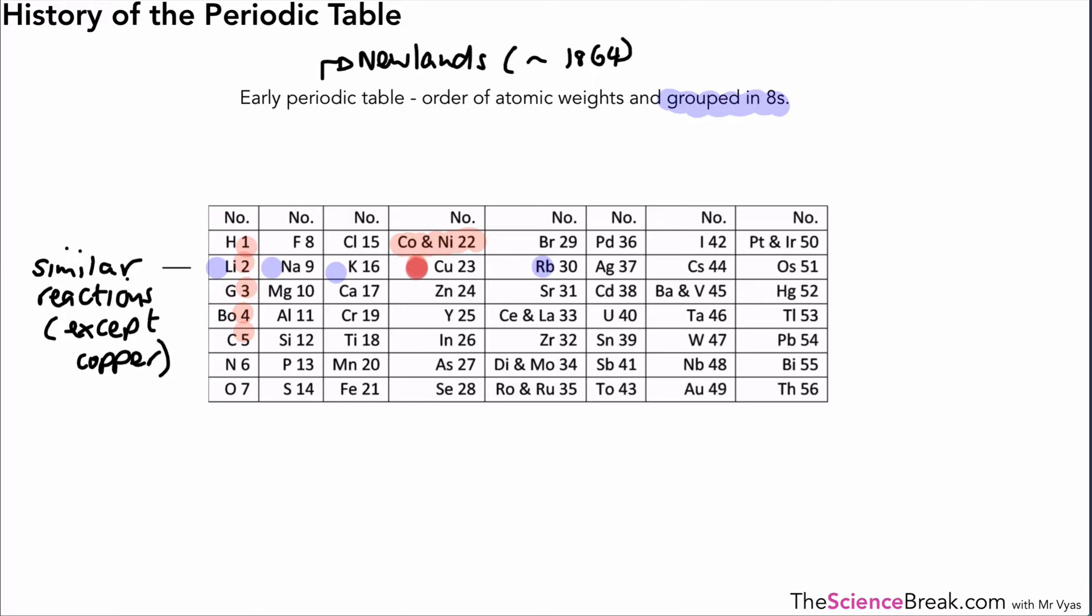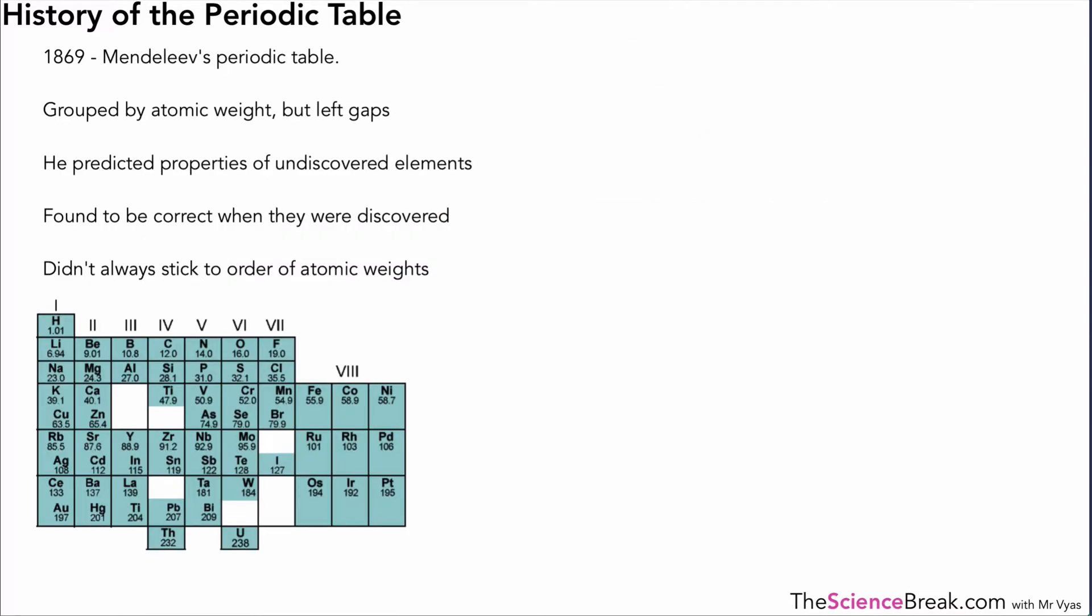So after Newlands, about five years later, there was another scientist. He was a Russian and his name was Dmitry Mendeleev and he is generally known as the person who developed the modern periodic table. What he did that was slightly different was that he grouped the elements by their atomic weight but he left gaps because he thought there were undiscovered elements that would fit in those gaps. Whereas Newlands or people before just forced them into a group somewhere, he left gaps because he thought elements were going to be discovered and at that time elements were being discovered about once every year so it was a reasonable prediction or assumption to make.